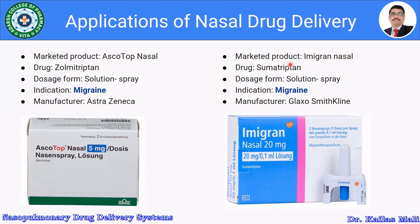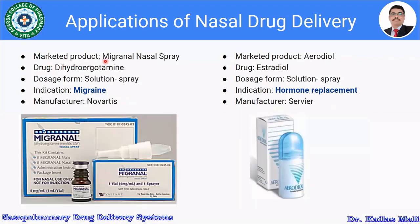Imigran Nasal is yet another product used for migraine, which contains the drug sumatriptan. It is available in the dosage form as a solution spray and is used for migraine. The manufacturer is GlaxoSmithKline.